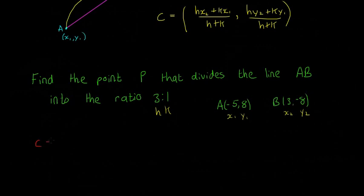Again, I'm going to call it the point C. You can call it whichever one you want, really. So HX2, so that's going to be 3 by X2, which is also 3, plus K, which is 1, by X1, which is minus 5, divided by H plus K, which is 3 plus 1.